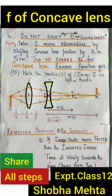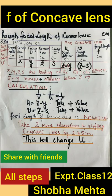So, Y minus Z becomes the object distance and S minus Z is the image distance for the concave lens. Use the lens formula. Take two more readings.